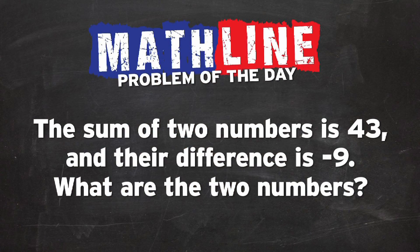Let's warm you and me up on problem of the day. Problem of the day today says the sum of two numbers is 43 and their difference is negative 9. What are the two numbers? Again, we got two numbers that are going to add up to 43, but at the same time, they're going to have a difference of negative 9. That means when we subtract them, we're going to look for the two numbers.